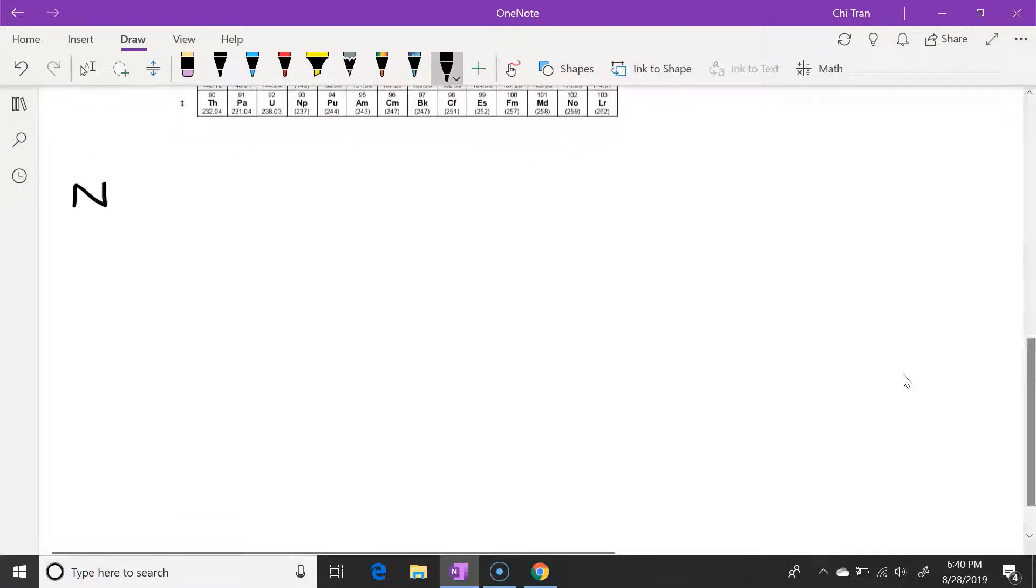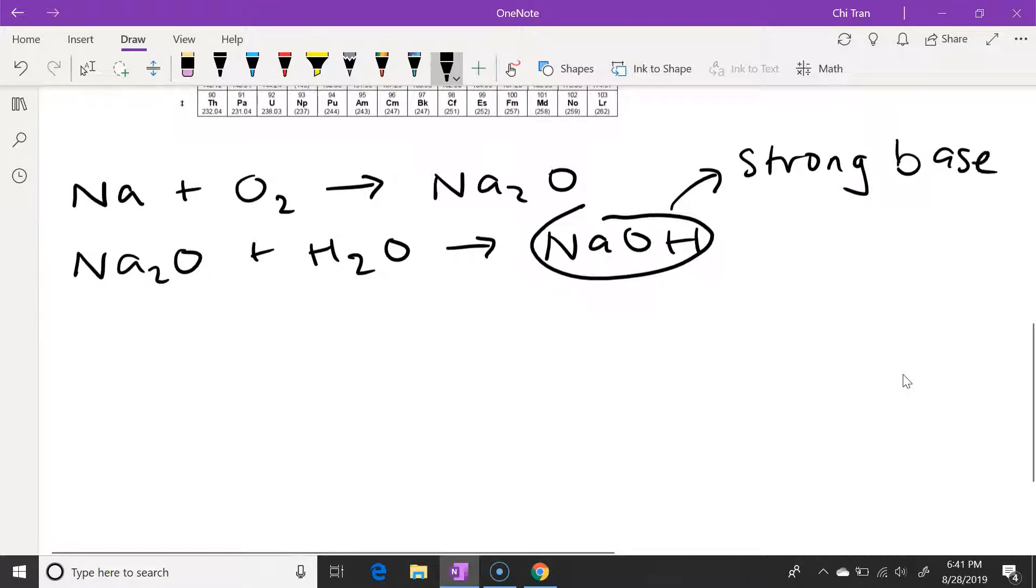Let's look at some examples. So we have sodium as a metal. And if we were to add that with oxygen, we would have sodium oxide. And when this sodium oxide is added into water, we would get sodium hydroxide. And this, as we can see, is a strong base.